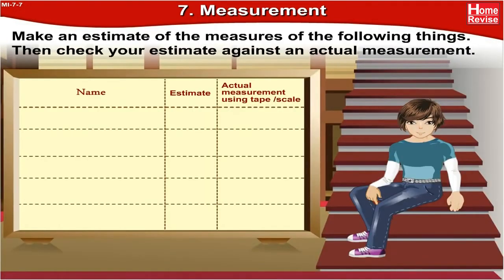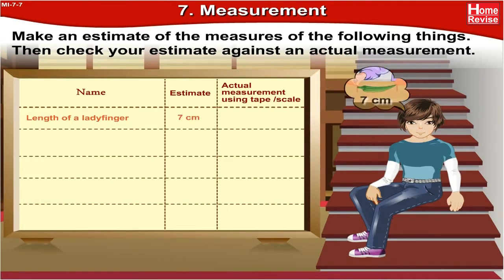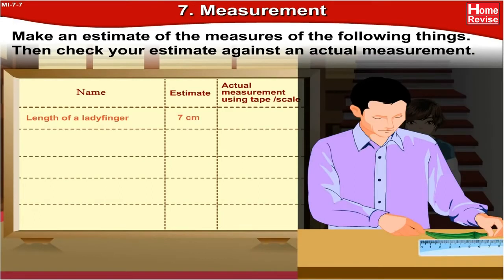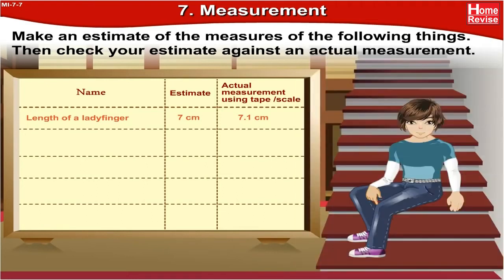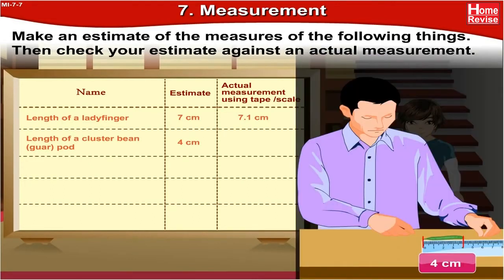Kids, make an estimate of the measures of the following things, then check your estimate against an actual measurement. Length of a ladyfinger — Tony estimated 7 centimeters, and the actual measurement is 7.1 centimeters. That's a great guess, Tony. Length of a cluster bean or guar pod — Nandu estimated 4 centimeters, and the actual measurement is 4 centimeters as well.